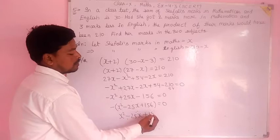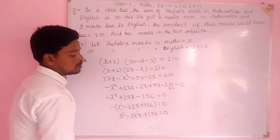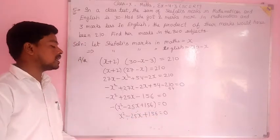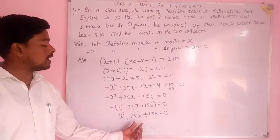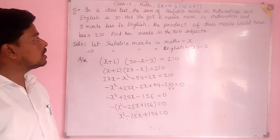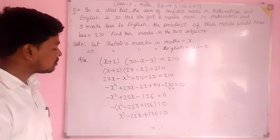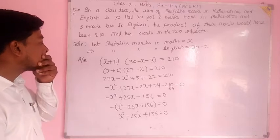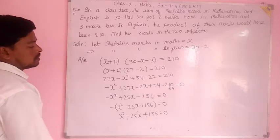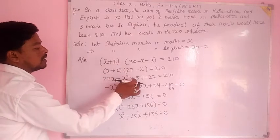Now X squared has a negative sign. Taking minus common: X squared minus 25X plus 156 equal to 0. Now I need two numbers whose product is 156 and when I add them, I get 25X.